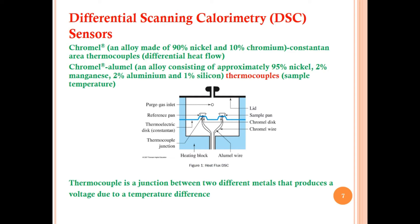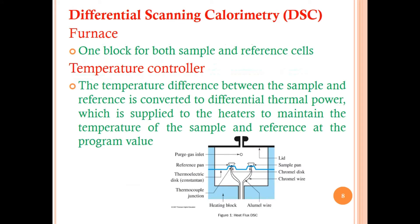A thermocouple is a junction between two different metals that produces a voltage due to temperature difference. One block for both sample and reference cells is called the furnace. The temperature difference between the sample and the reference is converted to differential thermal power, which is applied to the heaters to maintain the temperature of the sample and reference at the programmed value.